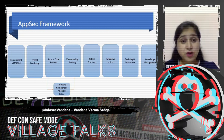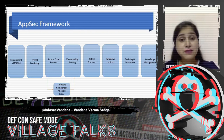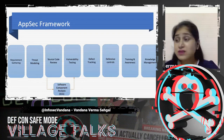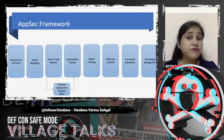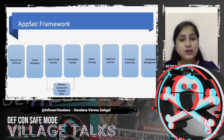In every AppSec pipeline, these are the things which are required: requirements gathering, threat modeling, source code review. All of these things are really necessary when we are setting up an AppSec pipeline. Students can have their own projects and they want to build the whole pipeline — they can start understanding these are the things which are necessary and which we should be addressing, even before coming out of college. Especially for a startup, if they don't have any view of what components they need for an application security program, these are some basic components which every organization should have.